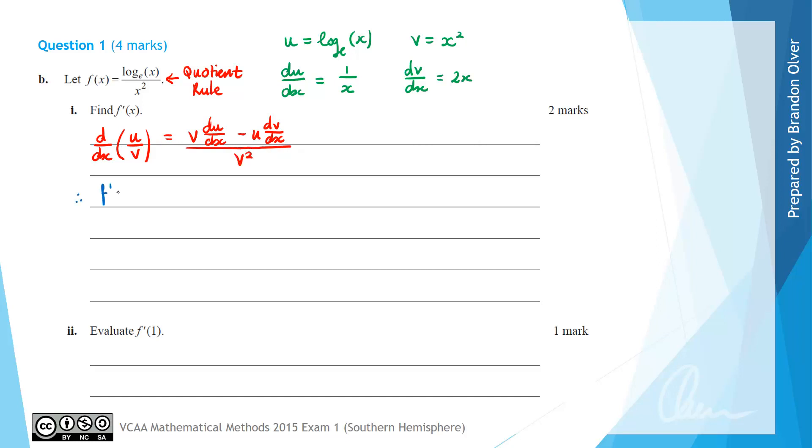So therefore the derivative f'(x) is going to equal v which is x squared, so we're going to have x squared times du/dx which is 1 over x, minus u which is log_e(x) times dv/dx which is 2x. And all of that is going to be divided by v squared which is x squared squared.